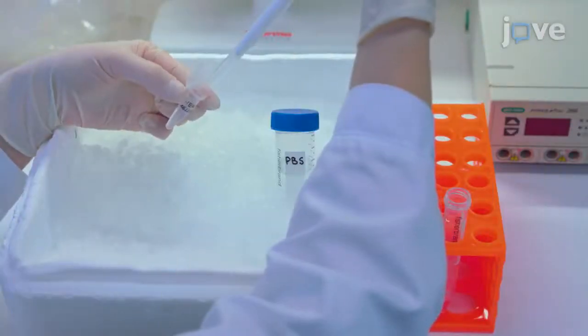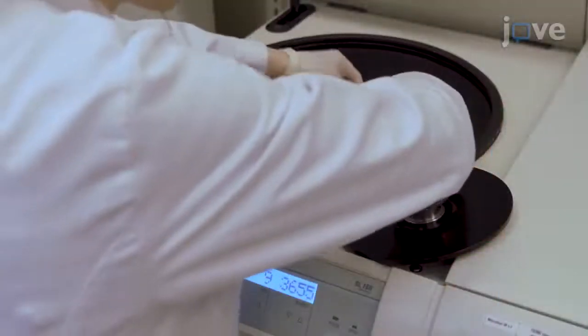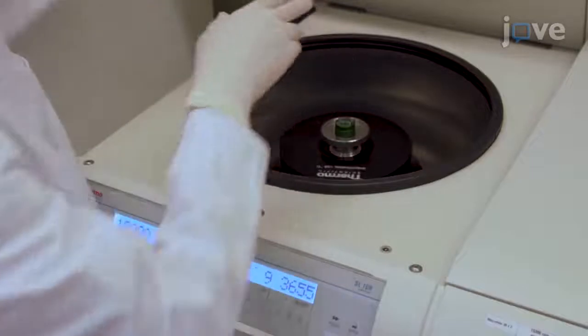Then wash the cell pellet twice with the ice-cold PBS and centrifuge at 4 degrees Celsius at 800g for 10 minutes.